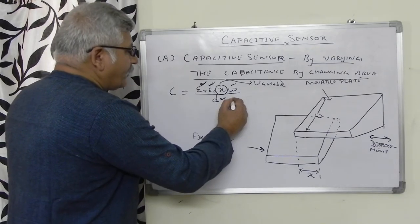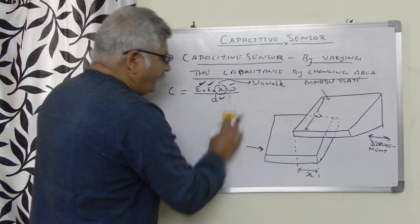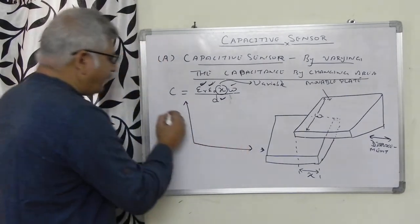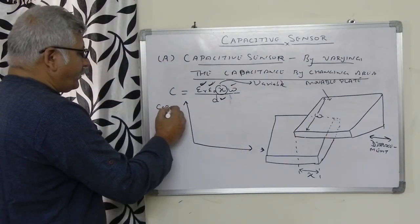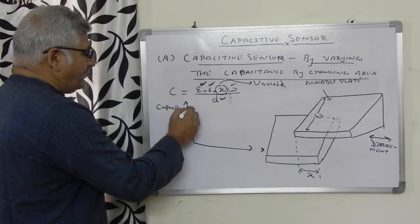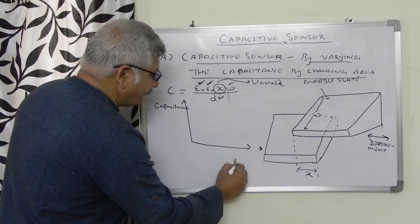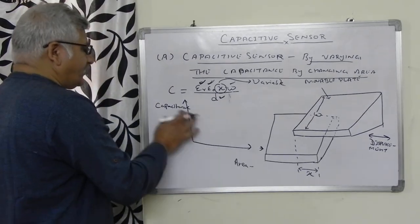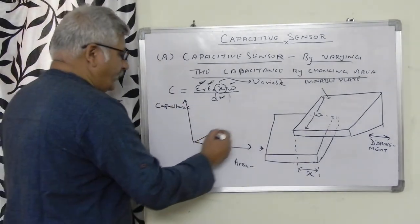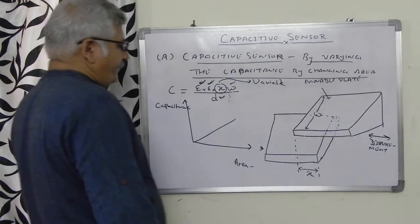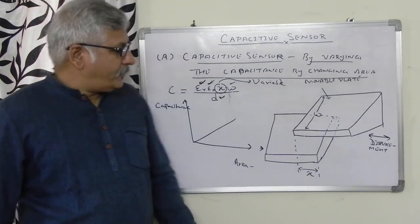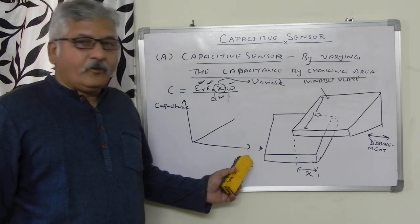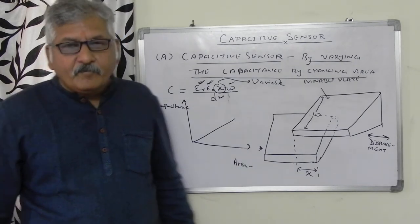If we see the graph between capacitance and area, with area on the x-axis and capacitance on the y-axis, the capacitance increases linearly with the increment in the overlapping area.